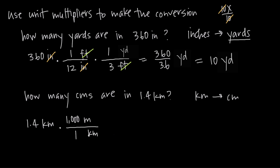Now we know we'll be able to cancel our kilometers, but we're going to be left with meters, and we need to get from meters to centimeters — centimeters is our final destination. Do we have a relationship between centimeters and meters? We do: there are 100 centimeters in every meter. With our unit multipliers, we're going to need meters in the denominator to cancel, and 100 centimeters in the numerator for every 1 meter. Now we can cancel kilometers in the numerator and denominator, cancel meters in the numerator and denominator, and the only units left are centimeters — which is exactly what we need.